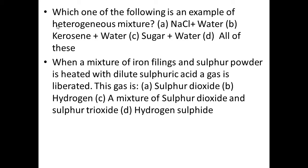Correct option — Anshika, roll number 42. The correct option is D, hydrogen sulphide. No — the mixture is not yet heated here; you are doing dilute sulphuric acid with the mixture directly. The correct option is B — hydrogen.